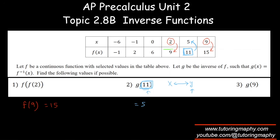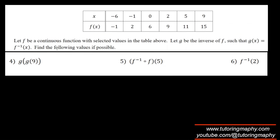For g(9), I'm looking for the y-value of 9 in the table. Be careful — 9 appears in both x and y columns, so make sure you're looking for 9 in the y column. The corresponding x coordinate is 2, so g(9) = 2. Then g(2): the y-coordinate equals 2 at x = -1, so g(2) = -1.